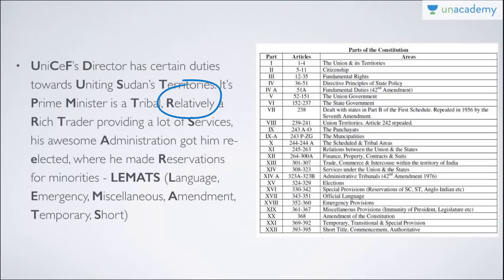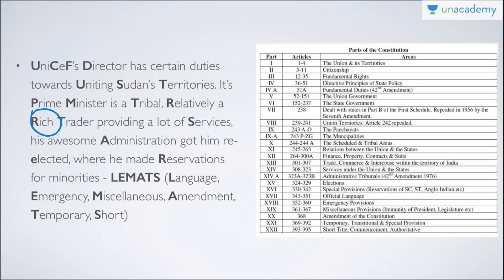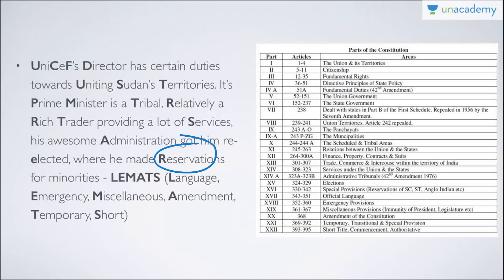He is a tribal — Scheduled and Tribal Areas (Part 10). 'Relatively' means Relations between Union and States (Part 11). 'Rich' means Finance, Property, Contracts and Suits (Part 12). 'Trader' means Trade, Commerce and Intercourse (Part 13). 'Providing a lot of services' means Services under the Union and States (Part 14). 'Administration' means Part 14A — Administrative Tribunals, also added by the 42nd Amendment Act. 'Re-elected' means Elections (Part 15). 'Reservations' means Special Provisions for SC/ST and Anglo-Indians (Part 16).